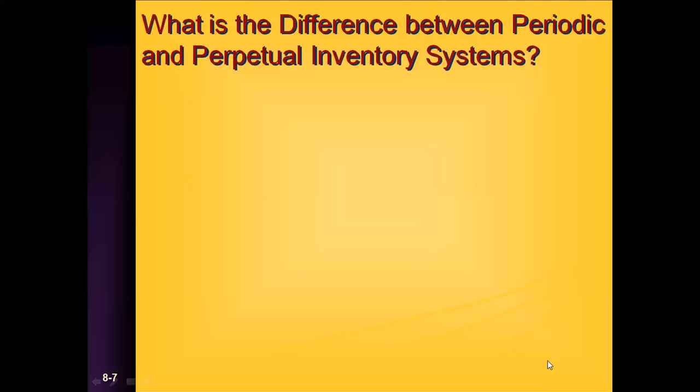Hey, Accounting Scholars. Welcome to Chapter 8, Section 2. We're going to talk about periodic and perpetual inventory systems. These are two types of ways to record your inventory purchases and usage, and it really depends on the type of business you have, which ultimately will determine what type of inventory system you use. Let's get started and talk a little bit about the differences.